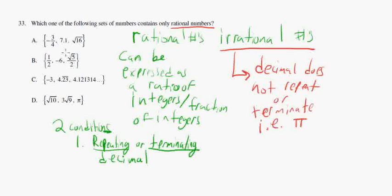So, let's look at a. Negative 3 quarters. If I were to turn this into a decimal, this would be 0.75. So, this is a repeating or terminating decimal. It also happens to be a fraction of integers. That's good. 7.1 is a terminating decimal. So, that's good. And, square root of 16. Well, 16 is a perfect square. So, square root of 16 is 4. So, it looks like a is good.